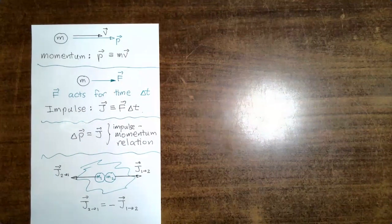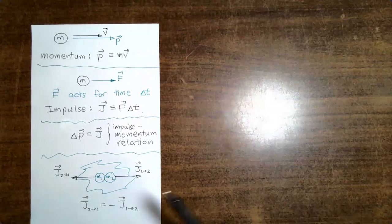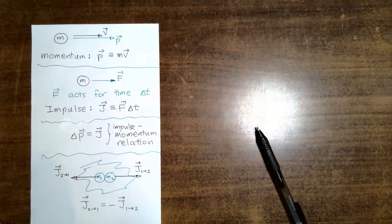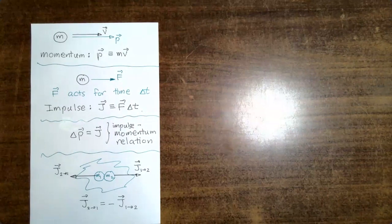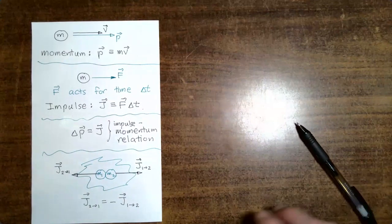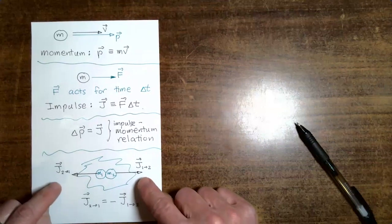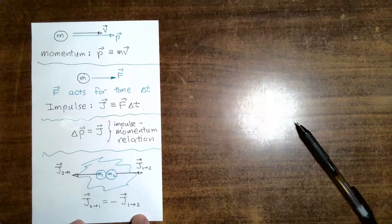There's one more key idea I need to remind you of before we get into the meat of this video. Suppose we have a collision between two masses. In that collision, the masses will exert forces on each other. Those forces will be exerted for some time interval, and because of that, we can say that the masses deliver impulses to each other. In an earlier video, we saw that a direct consequence of Newton's third law of motion is that the masses deliver impulses to each other which are equally large